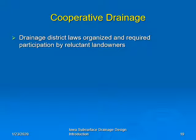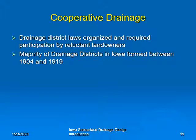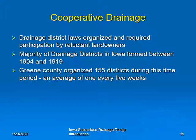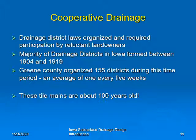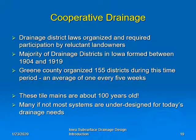Since there was so much drainage in place, a lot of people required outlets for their drain tiles. The drainage district laws organized and required participation by reluctant landowners. The majority of drainage districts in Iowa formed between 1904 and 1919, just after the law was implemented. In Greene County, they organized 155 districts during this time period — an average of one every five weeks. These tile mains are now about 100 years old, and many, if not most, of these systems are under-designed for today's drainage needs and cropping patterns.